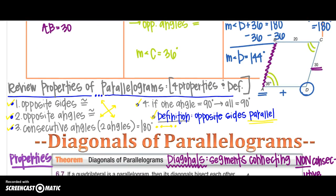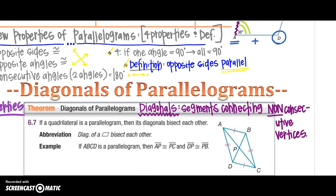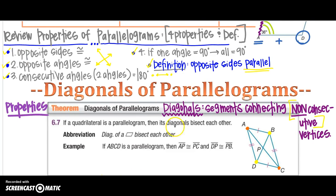Let's keep going on some more properties — we're going to talk about the diagonals of a parallelogram. A diagonal is a segment connected by non-consecutive vertices. So notice V is consecutive to C — they're right next to each other. The diagonal will connect the vertices that are across from each other. The diagonals in a parallelogram will bisect each other.